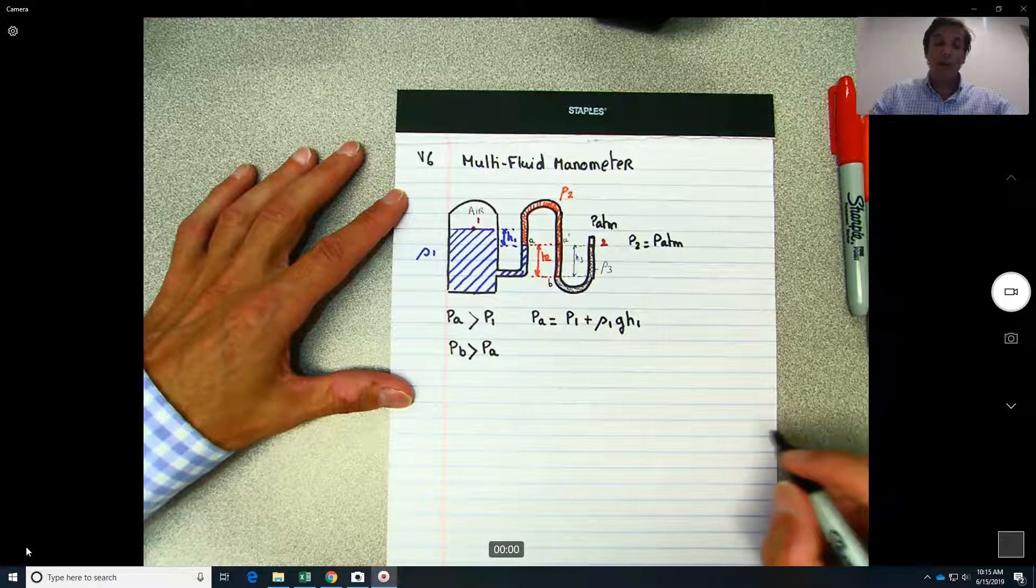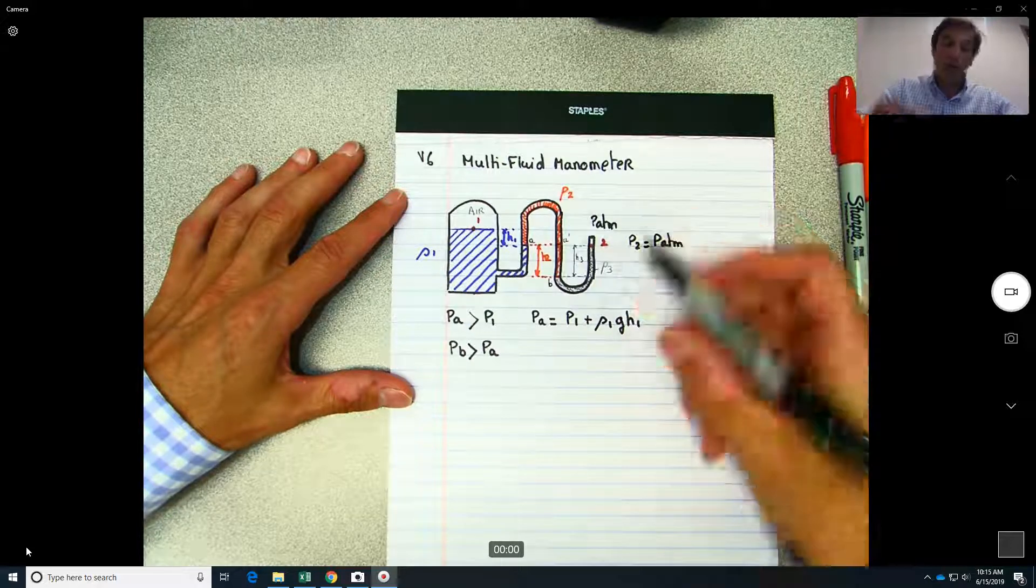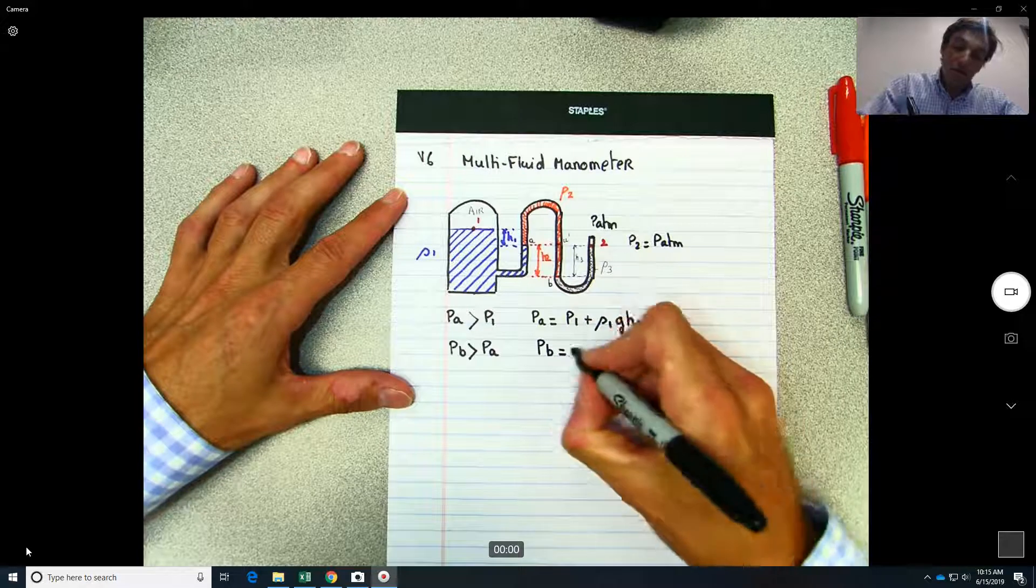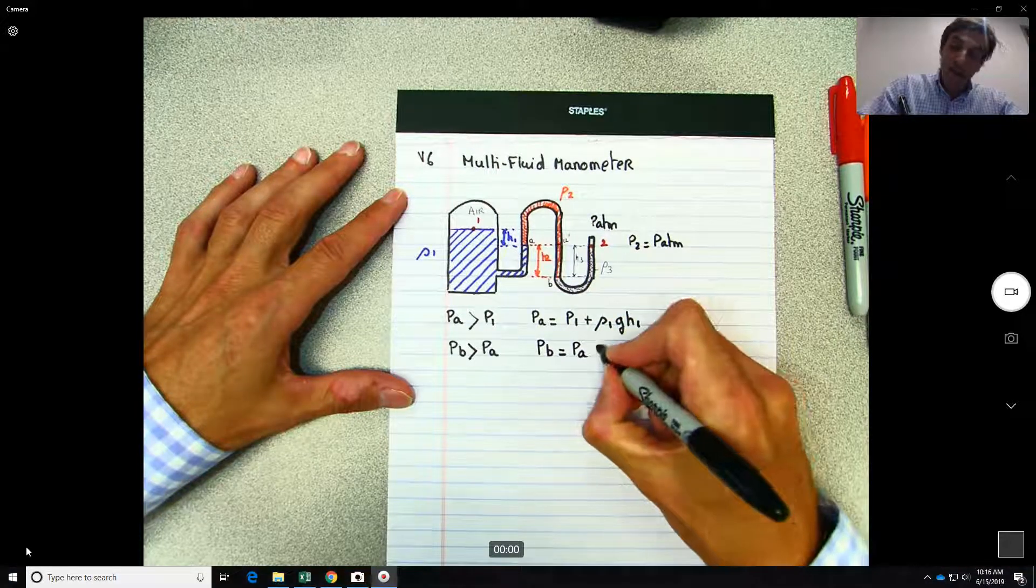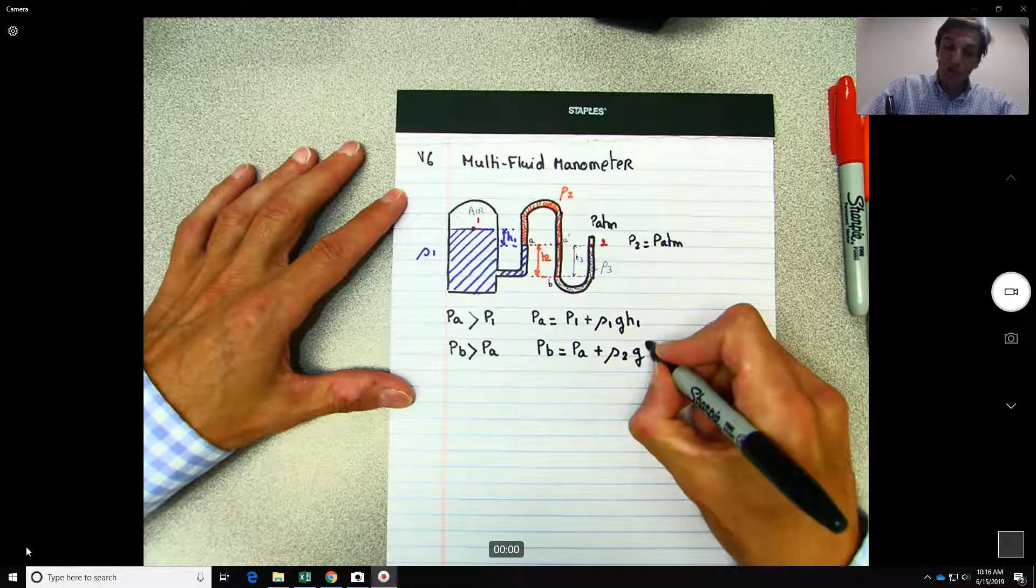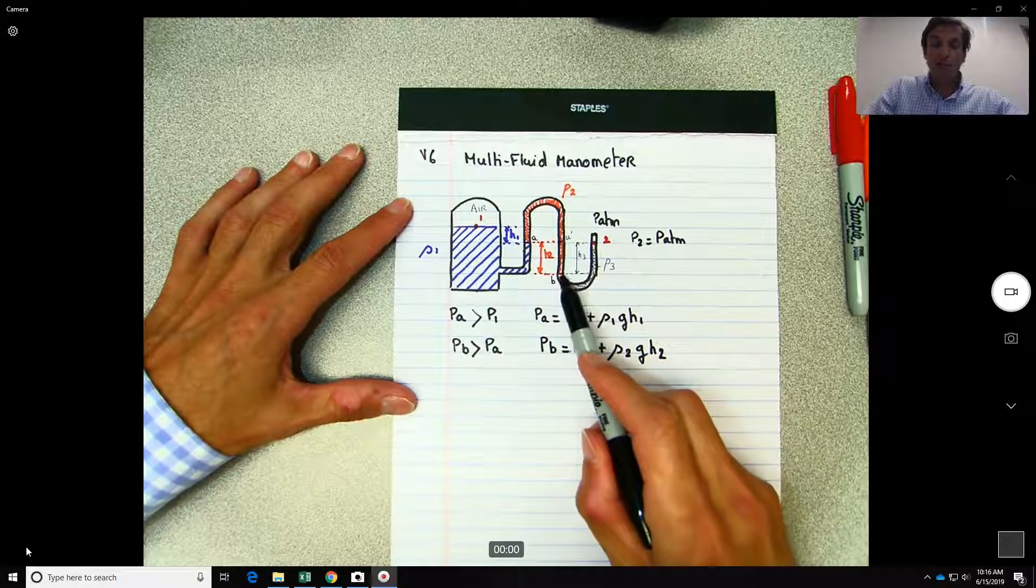Okay, and by how much? By this column here of fluid. So you can write down PB would be equal to PA plus rho 2 G h2.